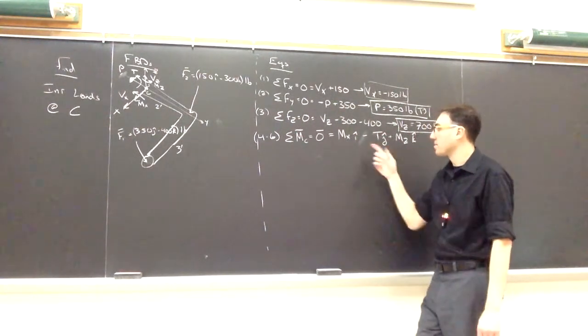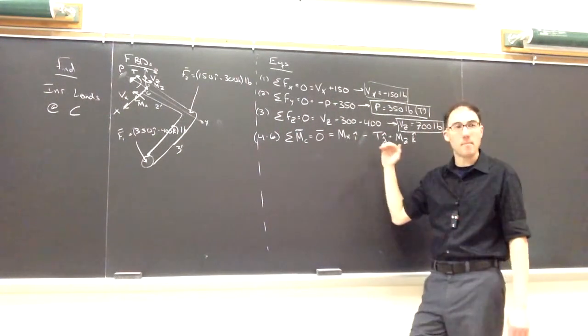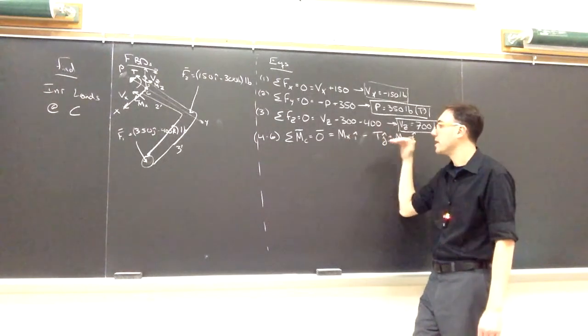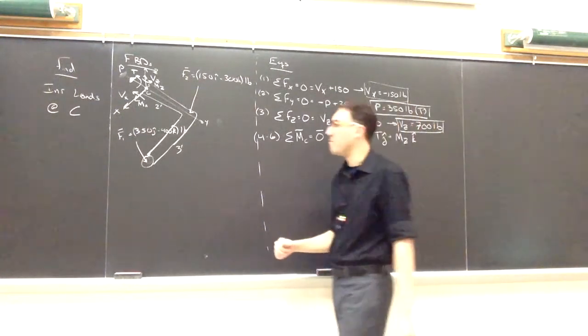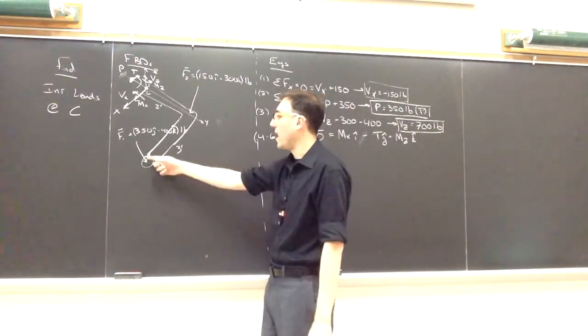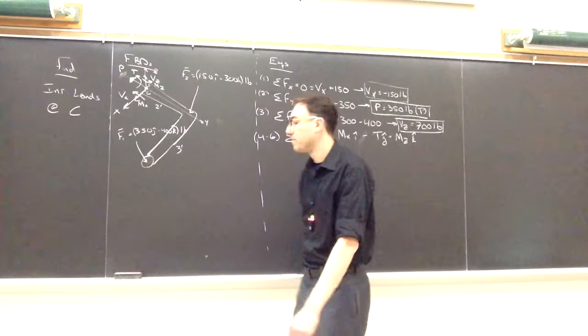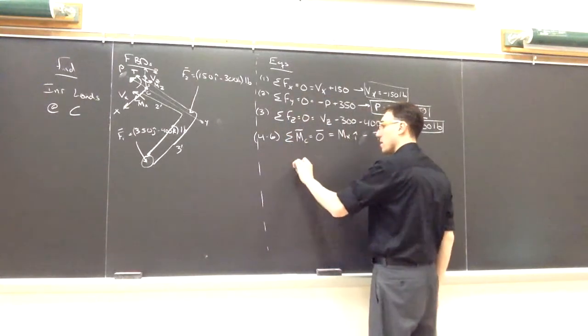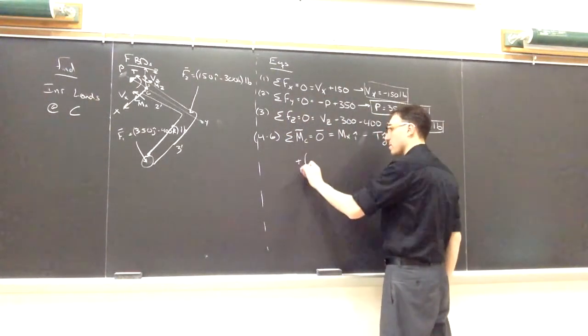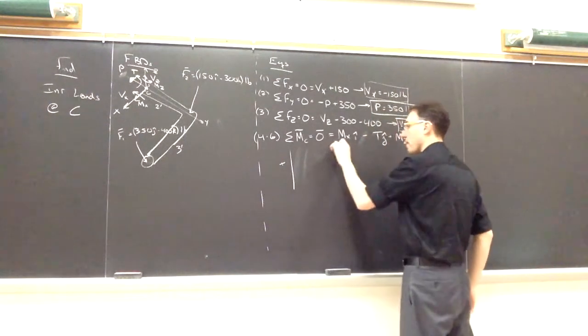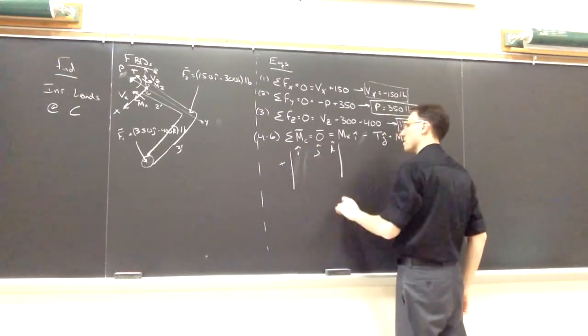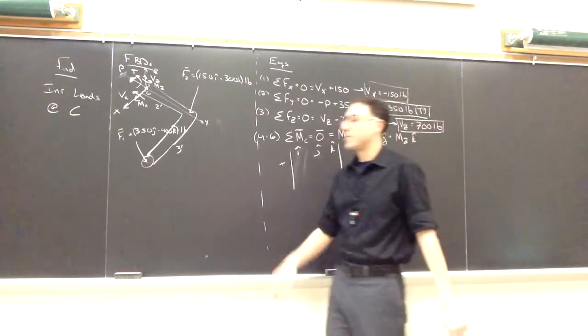Those are the couples with I's, J's, and K's. Remember, this is a vector equation. You need those unit vectors attached to them. And then also we're going to have moments caused around C by F1 and by F2. So I'll jump right to drawing it, writing it as a determinant here.